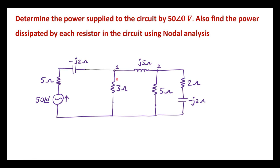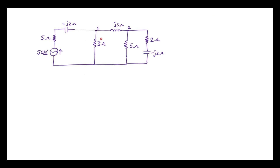We should use nodal analysis. As we know in nodal analysis, we are supposed to apply KCL to nodes. So this is node 1, this is node 2, and here we have the reference node. The voltage of the reference node is always 0. V1 is the voltage at node 1, and V2 is the voltage at node 2. The first step is to mark all the branch currents. I will assume current through this branch is I1, current through this branch is I2, current in this branch is I3, this is I4, and let this be I5.